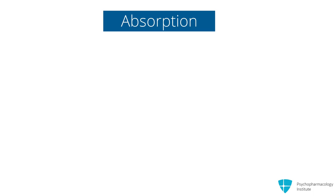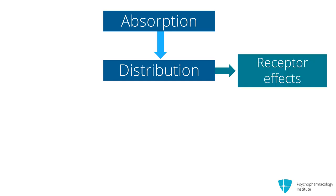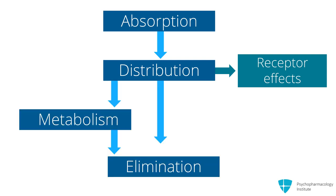First, pharmacokinetics. Think for a minute about how an oral drug works. It has to get into the bloodstream by absorption. It has to get to the brain by distribution. It has to have some effect at the level of the receptor. And then it has to be cleared from the body, either by direct elimination or, more commonly, by metabolism and then elimination.